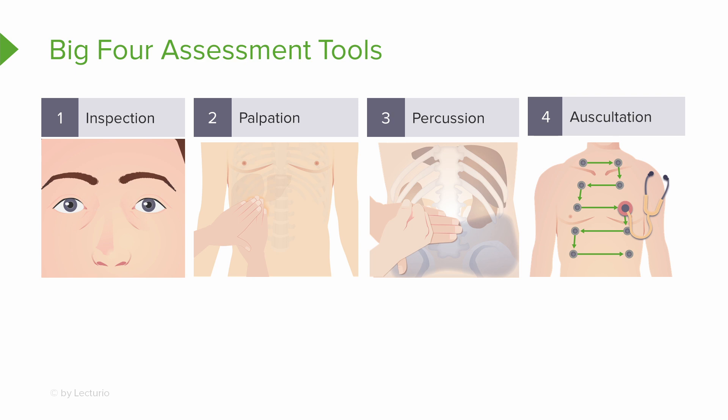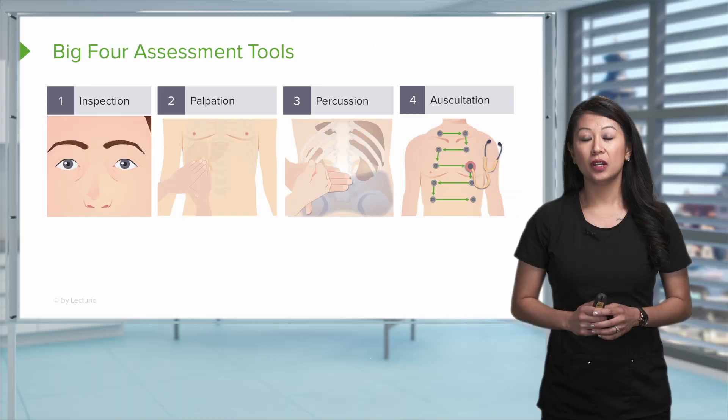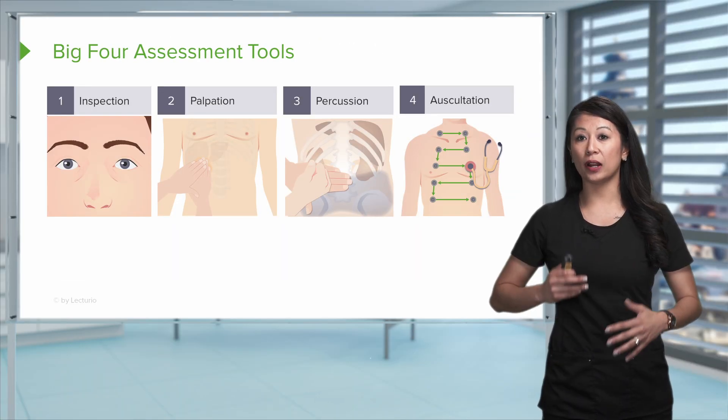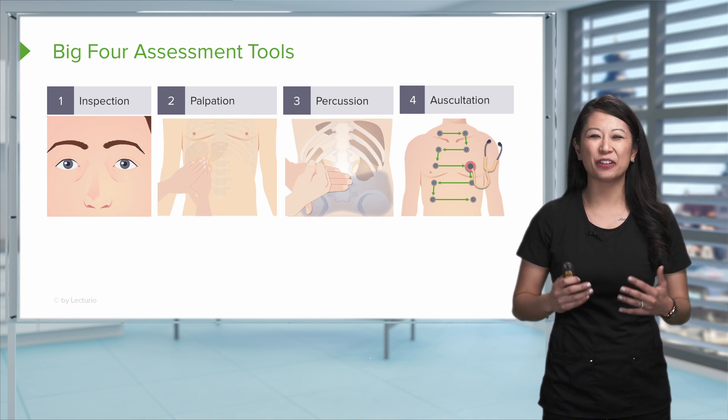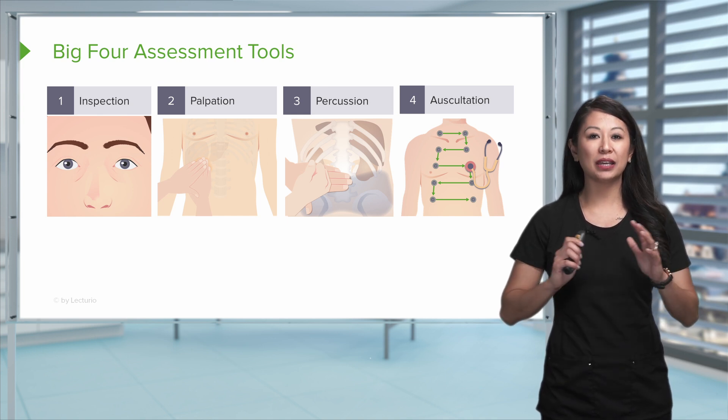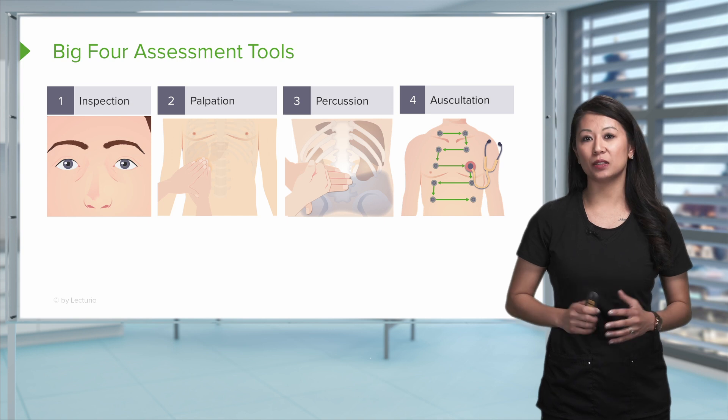And next is where we get to use what we call our ears, otherwise known as our stethoscope. Now this is the practice of auscultation, meaning we're listening. So we're using our stethoscope here and looking at different and listening to different parts of the body. We can pick up all kinds of important assessment details.